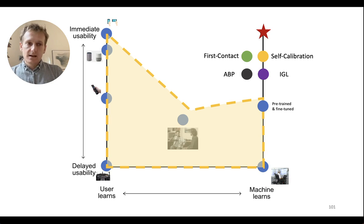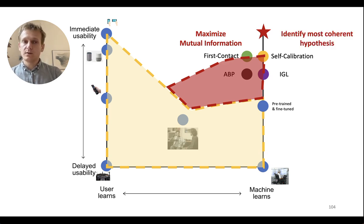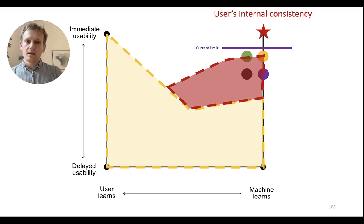What is this telling us? It's telling us that yes, I think with recent work, we can get a bit closer to this part on the top right corner. On one side, people have tried to maximize mutual information. On the other, people have tried to identify the most coherent hypothesis by sorting out consistency. I'll have a look at this paper to get an idea of what that is. But I think there is still a limit.